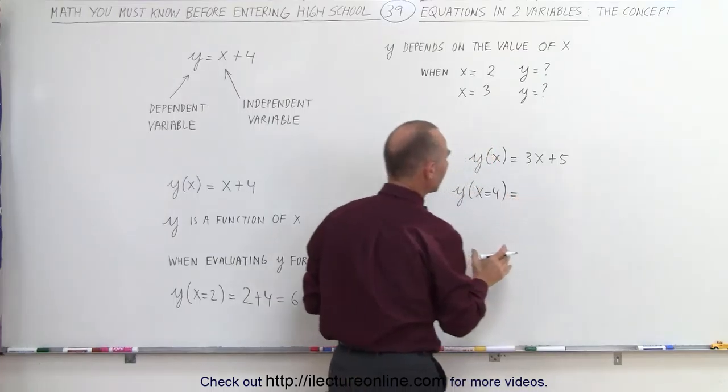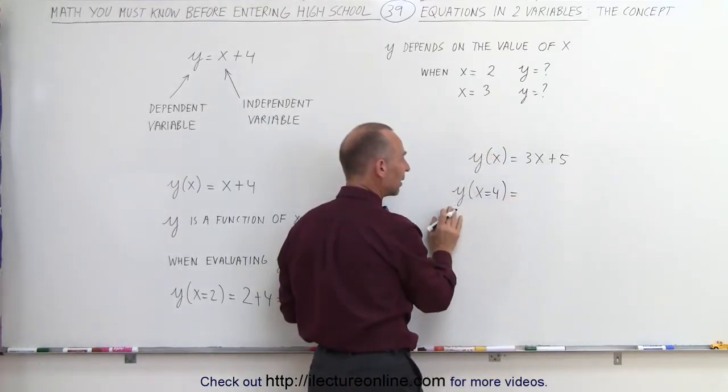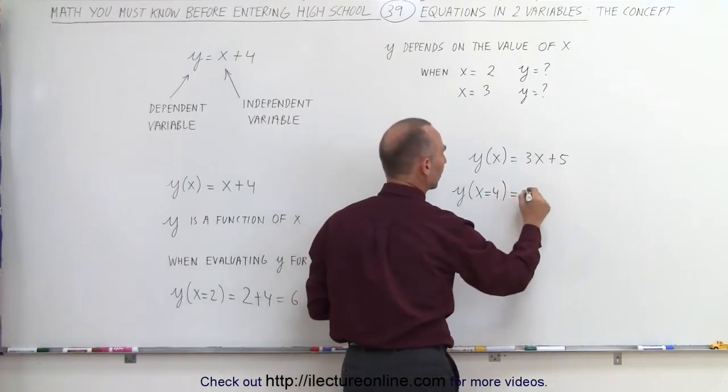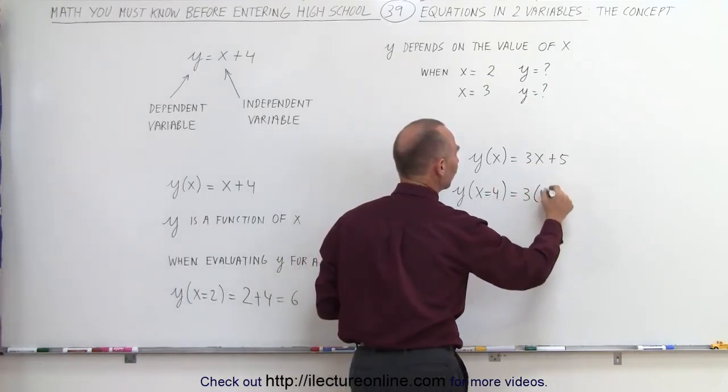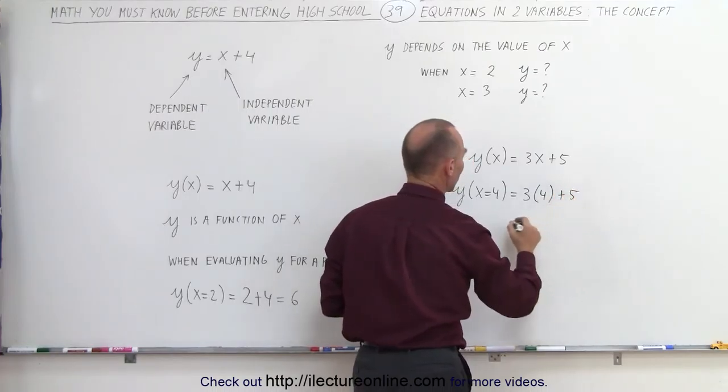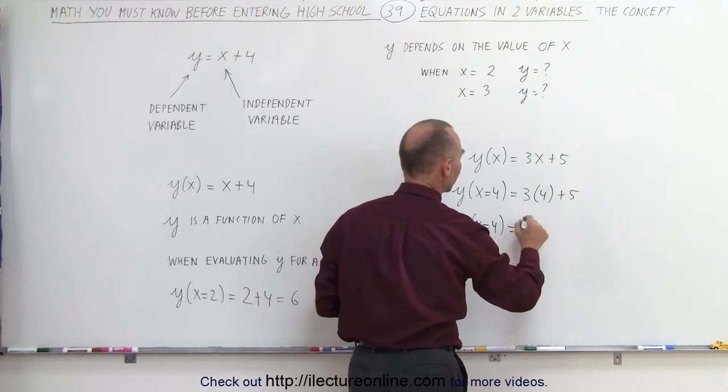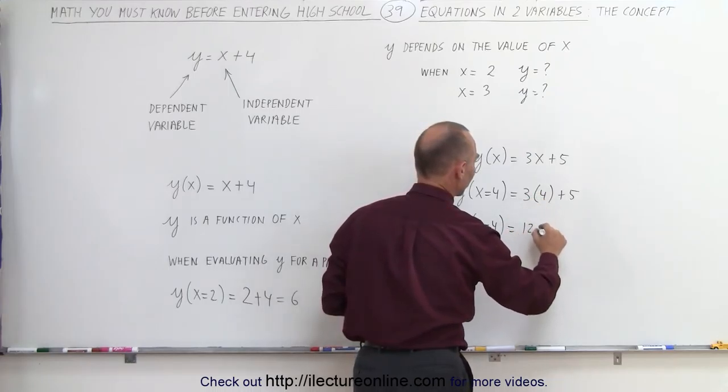again, we're going to evaluate the value for y by replacing every x by the value that x is equal to, which is 4. And this becomes 3 times 4 plus 5. So in other words, y, when x is equal to 4, is equal to 3 times 4, which is 12 plus 5.